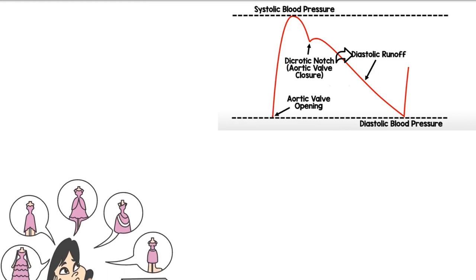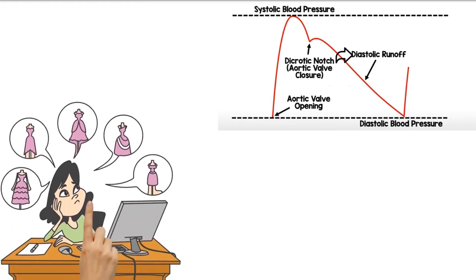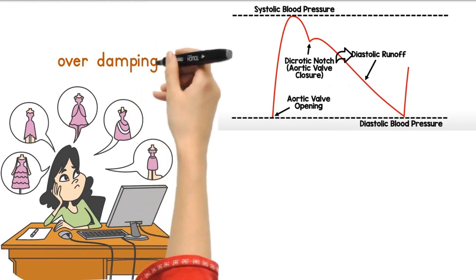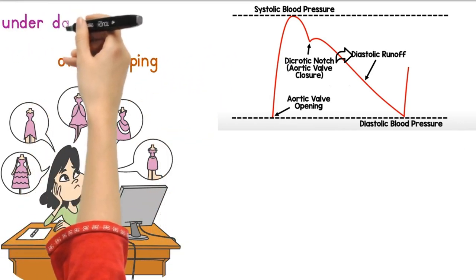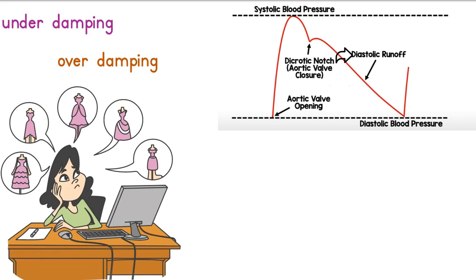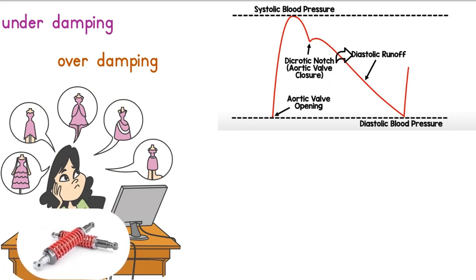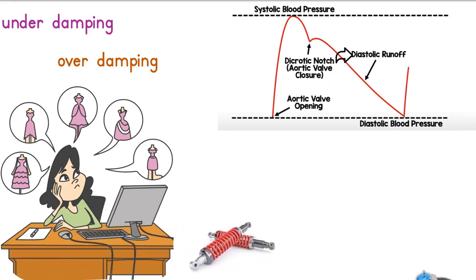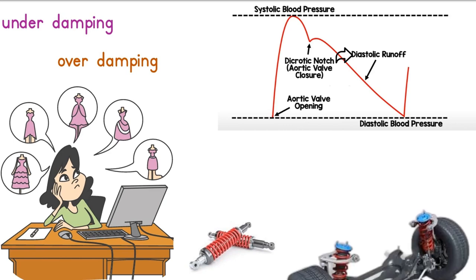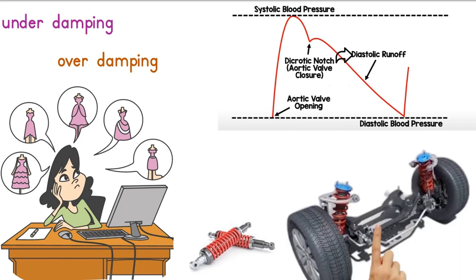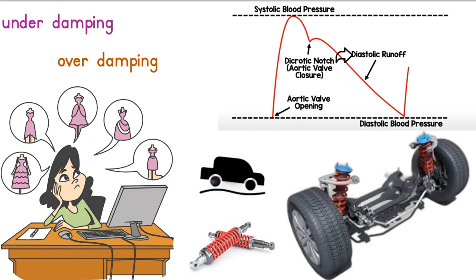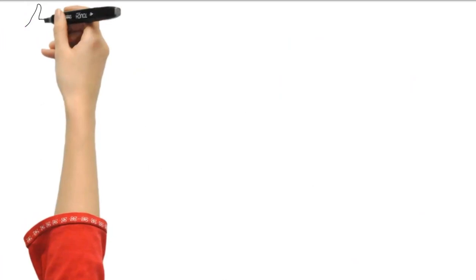Now there are two things that can happen that can give you false readings on an arterial line: one is called over-damping and the other one is called under-damping. All damping means on an arterial line — think of it as a shock absorber, like shocks on a car when you're going over a bumpy road. There are things that will make the shocks work better and there are things that will make them work worse.